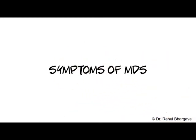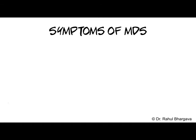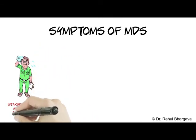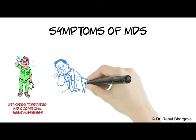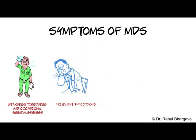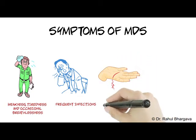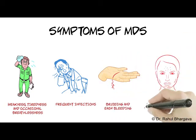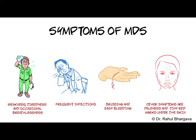Symptoms of MDS. The symptoms of MDS are generally mild in the beginning, but gradually they get worse and we might experience weakness, tiredness and occasional breathlessness because of the low number of red blood cells; frequent infections because of the low number of white blood cells; bruising and easy bleeding because of the low number of platelets. Other symptoms are paleness and tiny red marks under the skin.